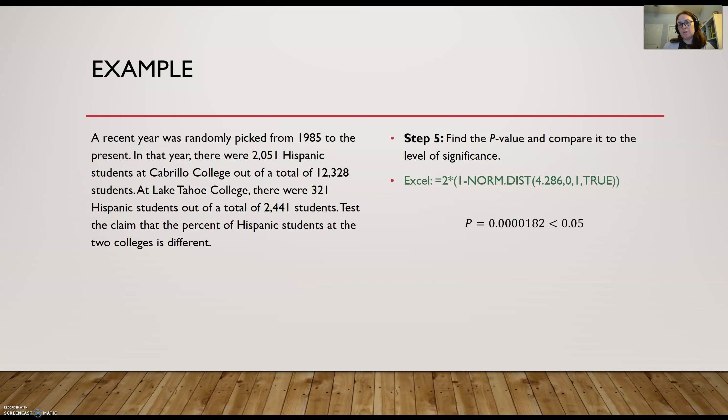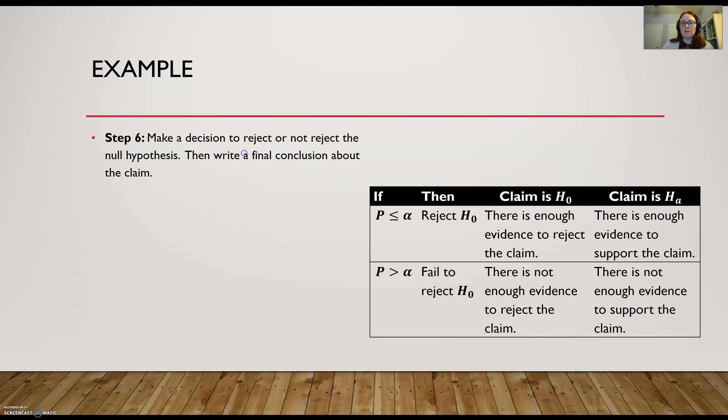So either way, I get this really tiny p-value, 0.0000182, about, which is definitely smaller than our alpha of 0.05. So the only thing left to do is come up with our decision for H-naught and for the claim. Now, our p-value was less than alpha. So that means that I'm going to reject H-naught, the null hypothesis. And the claim was the alternative. So there is enough evidence to support the claim since I am rejecting the null hypothesis. So there is enough evidence to support the claim that the percent of Hispanic students at the two colleges is different. And that is it for this problem.